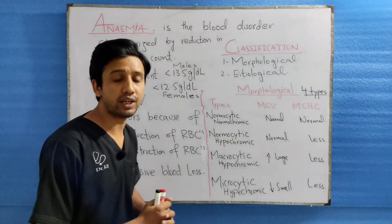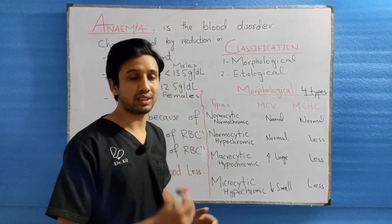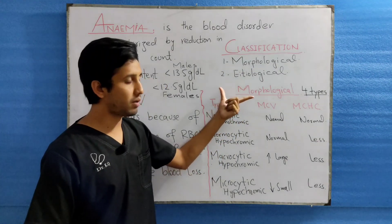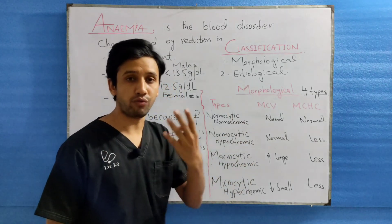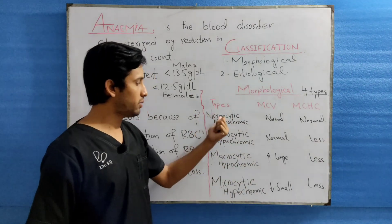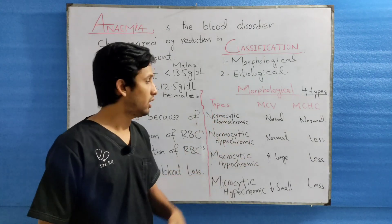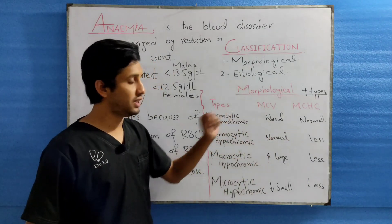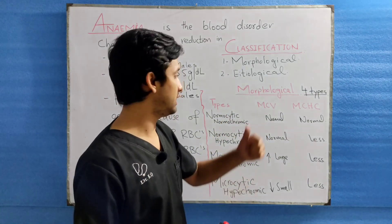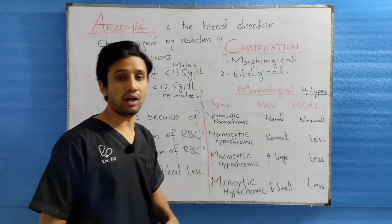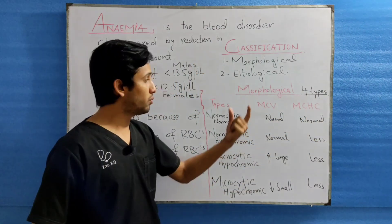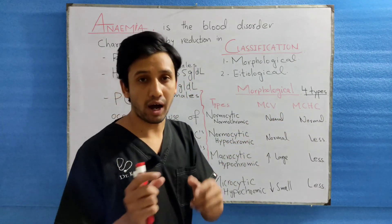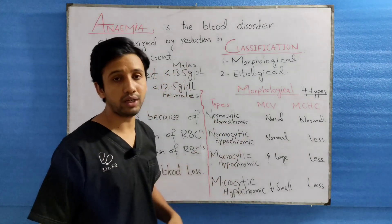Moving next to classification — anemia can be classified by two methods: number one is the morphological, and the second one is the etiological. The morphological method further divides anemia into four types. The first type is normocytic normochromic anemia, in which the MCV value and MCHC value are normal. MCV determines the size of the RBC while MCHC determines the color of the RBC. Both are normal, but there is a reduced number of RBCs in normocytic normochromic anemia.